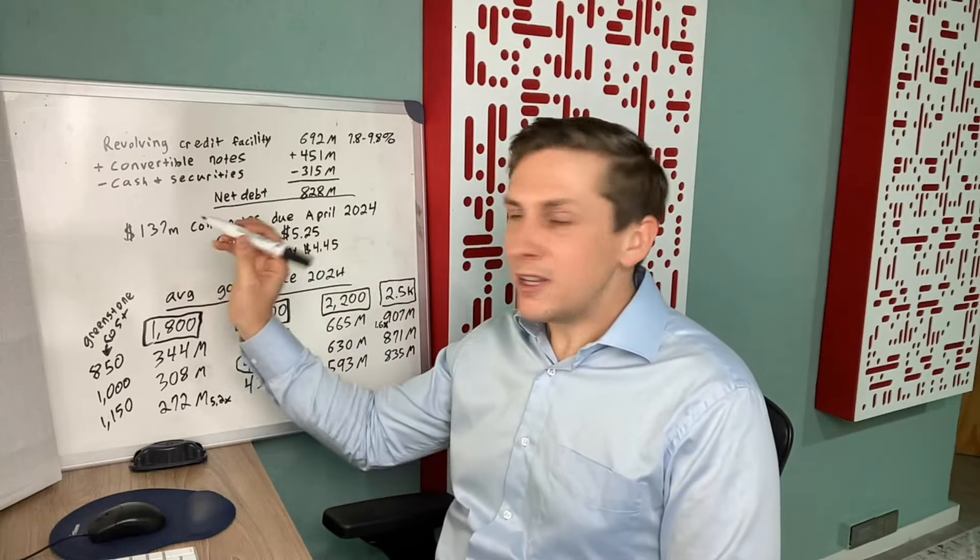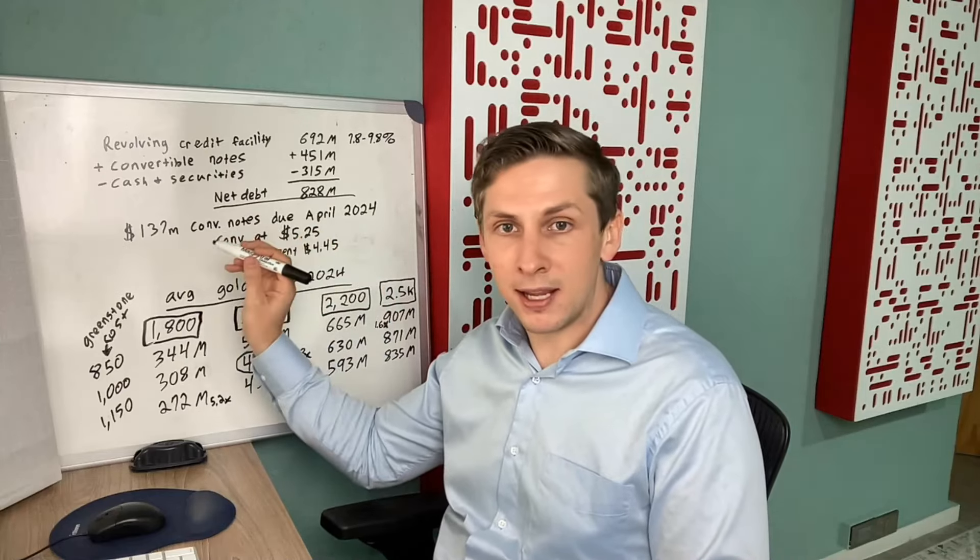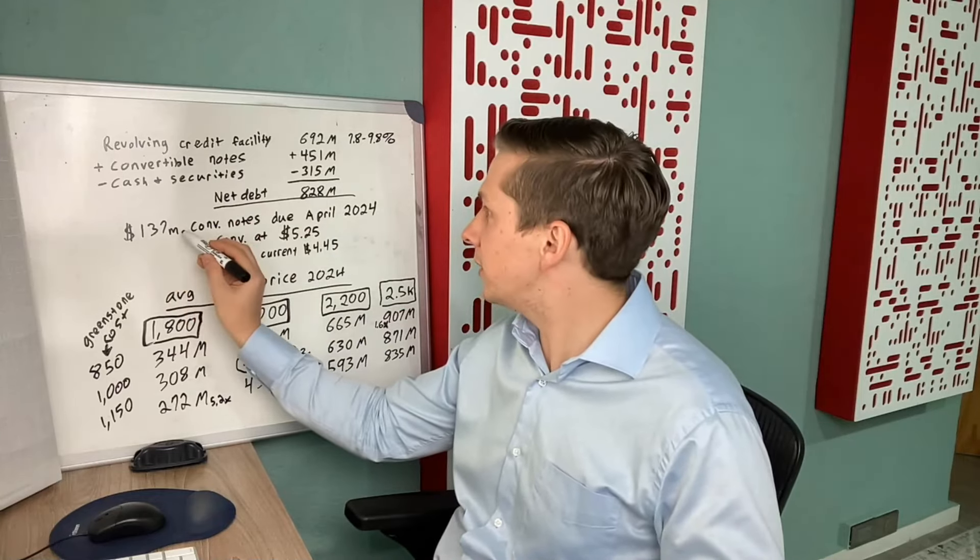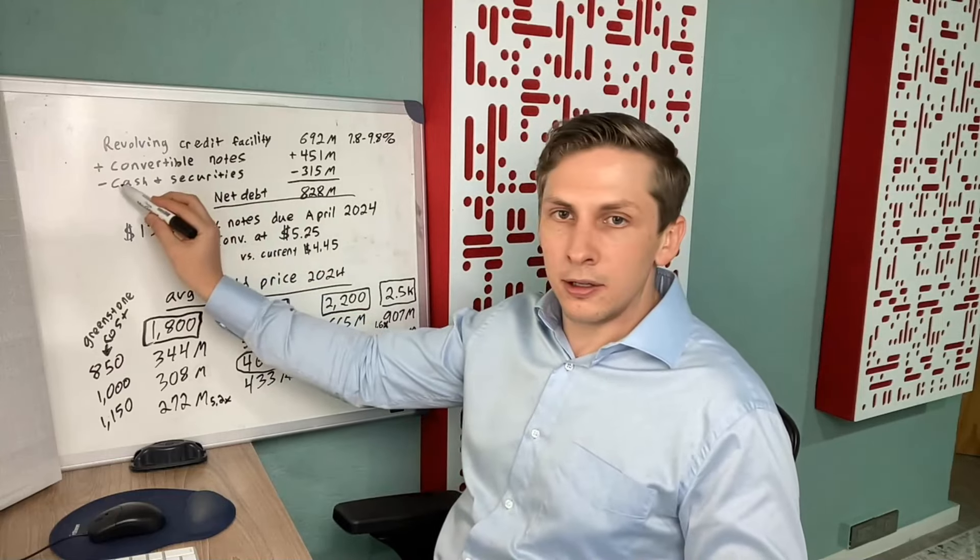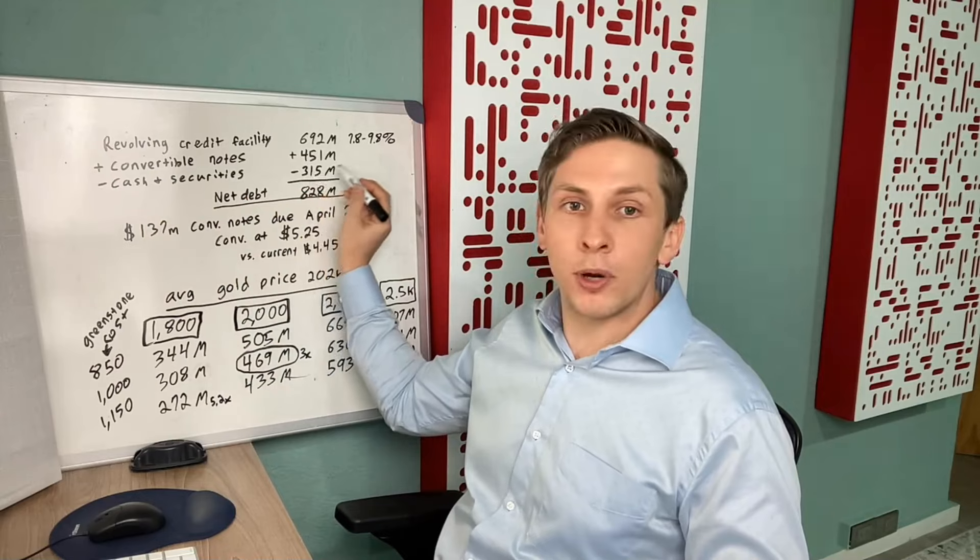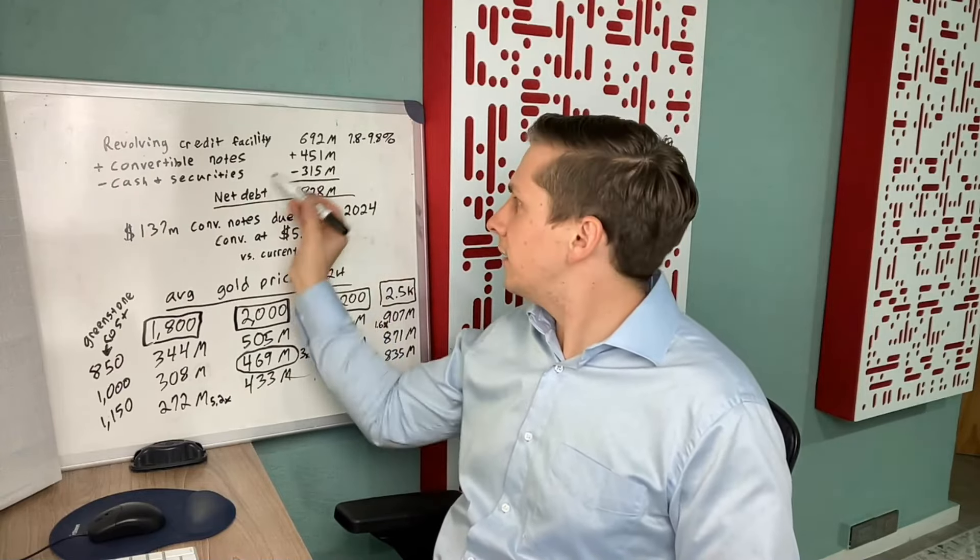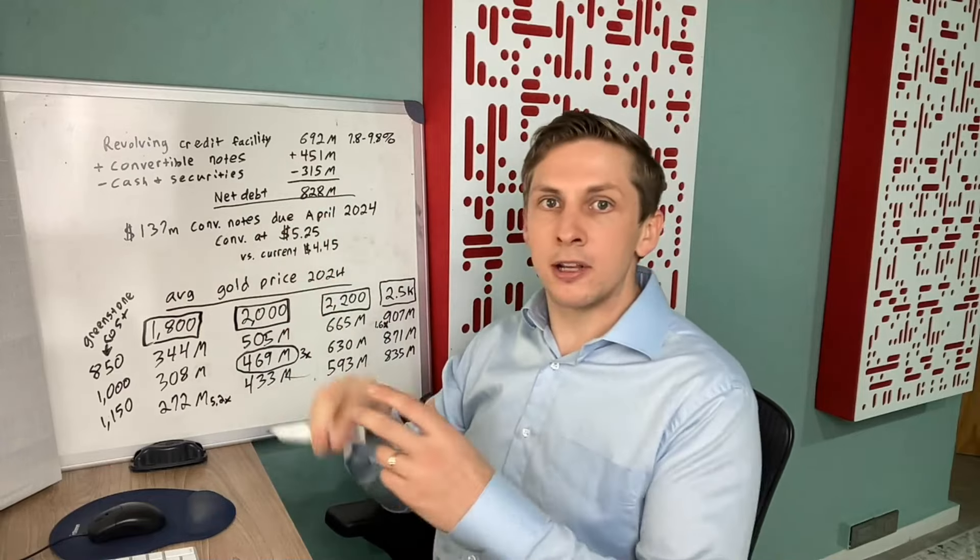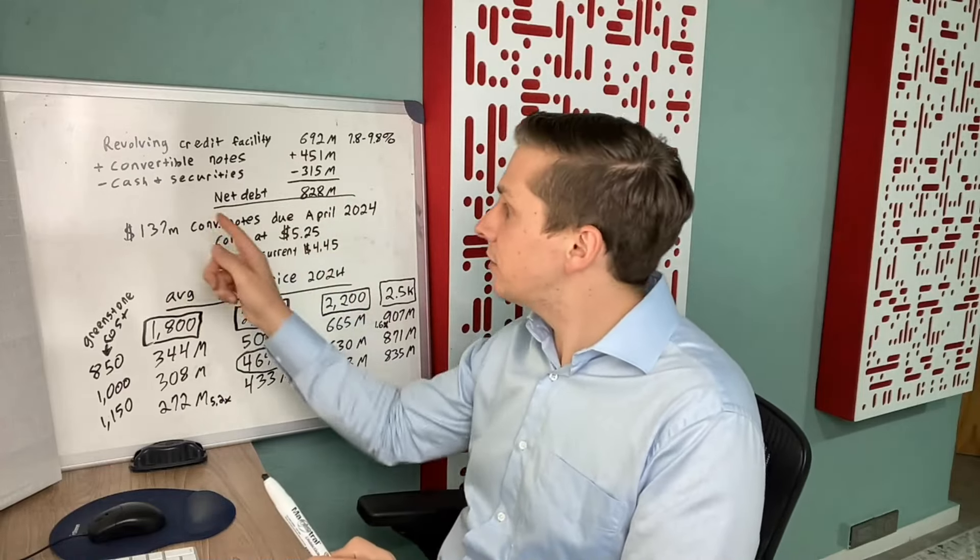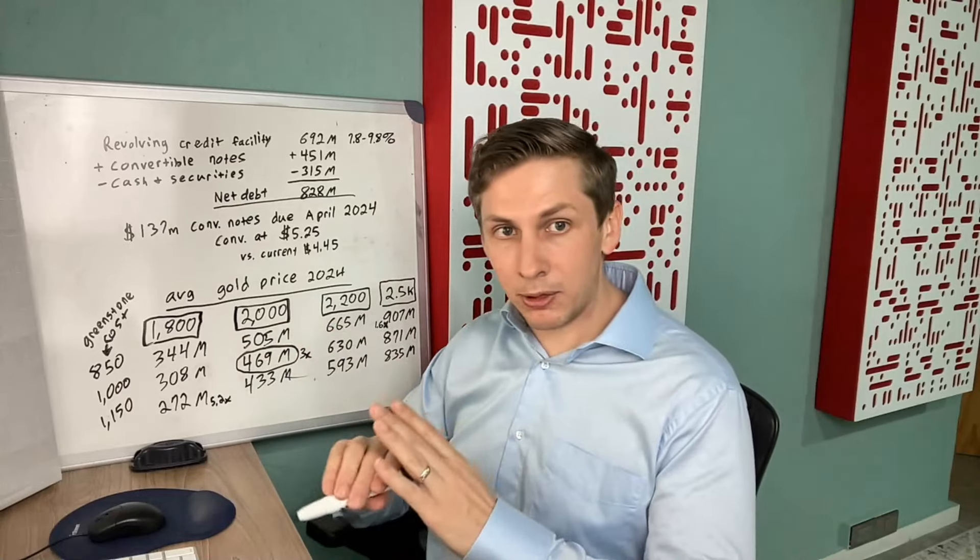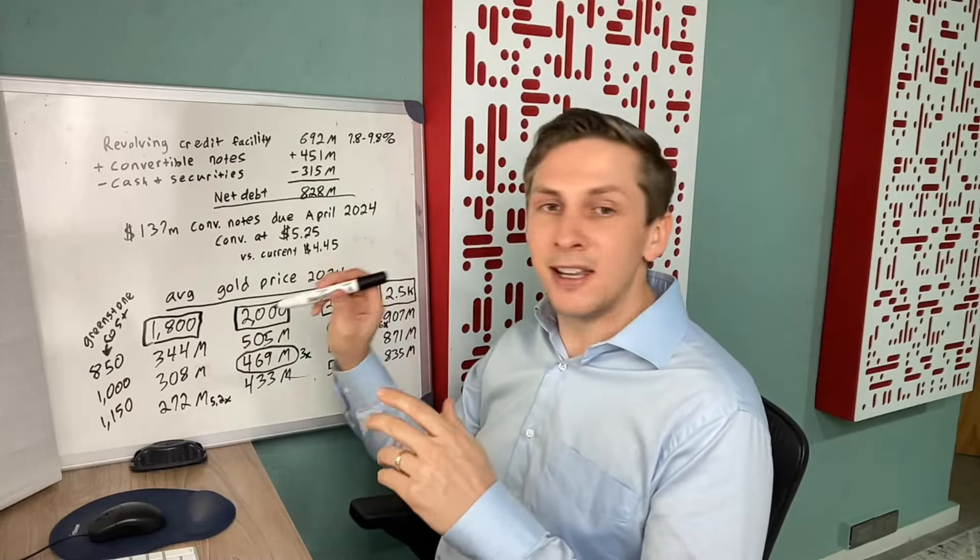Right now in cash and marketable securities they have $315 million, and they do have more than $137 million in cash. So they do have enough cash to pay that in April, so that shouldn't be a problem if the stock price is below $5.25 when those expire.